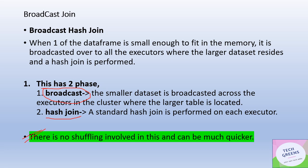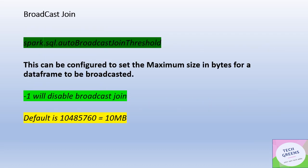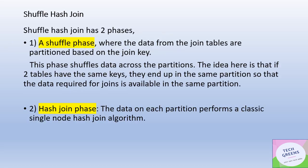There is no shuffling involved because data is locally available for the join to happen. The broadcast threshold configuration defaults to 10 MB. If you set it to minus one, Spark will disable broadcast join unless you explicitly provide a hint that a particular join needs to happen as a broadcast join.